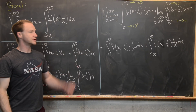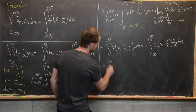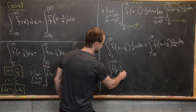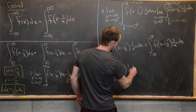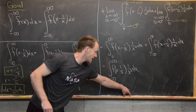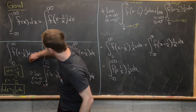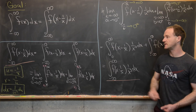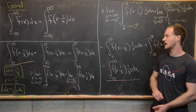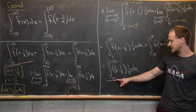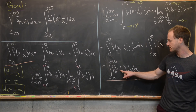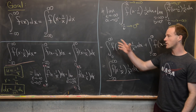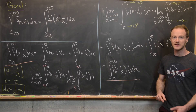Now we can push these back together, and we get the integral from minus infinity to infinity of f(x - 1/x) · 1/x² dx. So looking at the extreme left and right hand sides of what we've done, we've shown that the integral from minus infinity to infinity of f(x - 1/x) dx equals the integral from minus infinity to infinity of f(x - 1/x) · 1/x² dx.